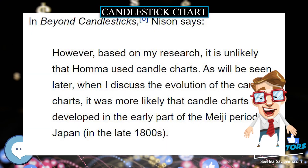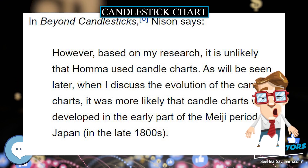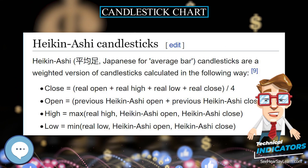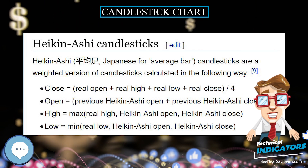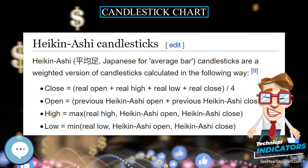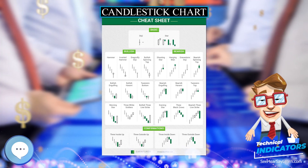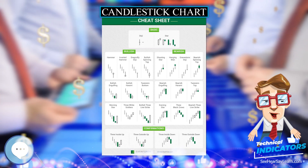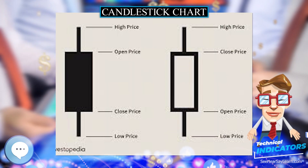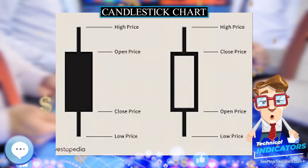It is similar to a bar chart in that each candlestick represents all four important pieces of information for that day: open and close in the thick body, and high and low in the candle wick. Being densely packed with information, it tends to represent trading patterns over short periods of time, often a few days or a few trading sessions.